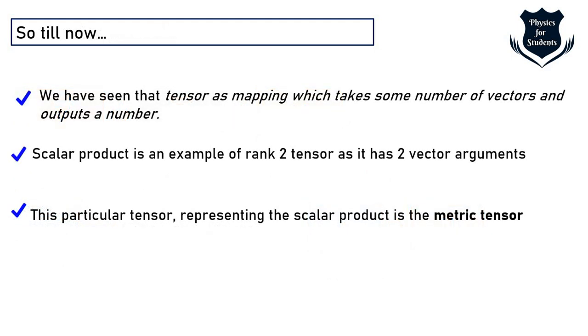So till now what we have seen is that tensor is mapping as mapping which takes some number of vectors u v whatever and it produces an output number which I have shown as n. Scalar product is an example of a rank 2 tensor because we kept it simple as two vector arguments.